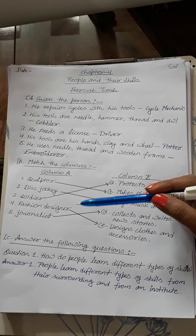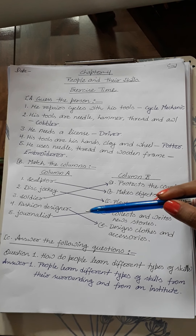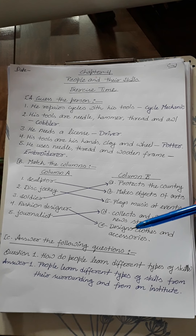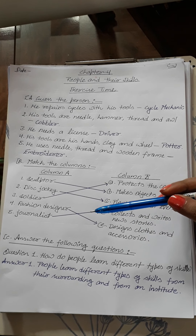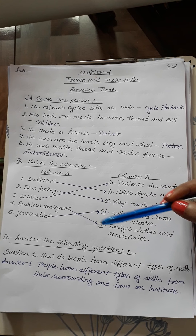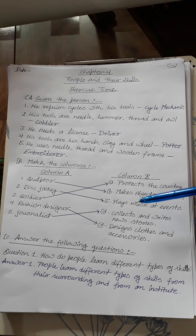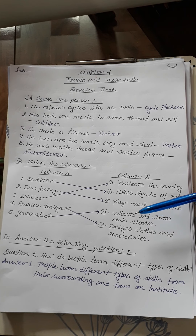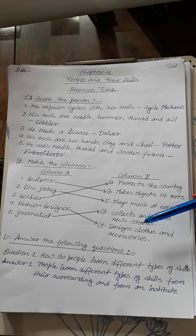Number 4: Fashion designer — a fashion designer designs clothes and accessories. Number 5: Journalist — a journalist collects and writes news and stories.